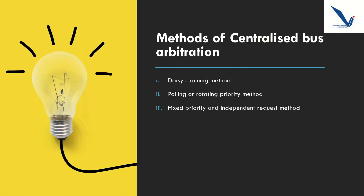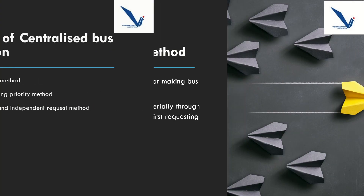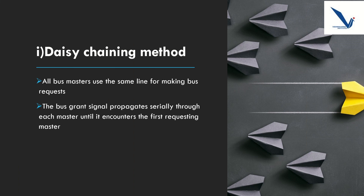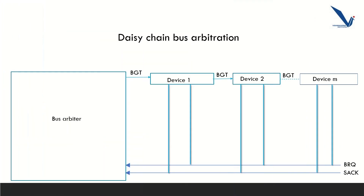Methods of centralized bus arbitration. There are three bus arbitration methods. First, the daisy chaining method. It is a simple and cheaper method where all the bus masters use the same line for making bus requests. The bus grant signal serially propagates through each master until it encounters the first one that is requesting access to the bus. Each master blocks the propagation of the bus grant signal. Therefore, any other requesting module will not receive the grant signal and hence cannot access the bus. During any bus cycle, the bus master may be any device — the processor or any DMA controller unit connected to the bus.